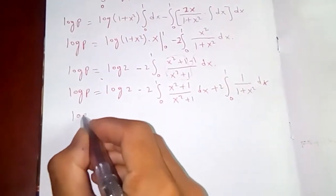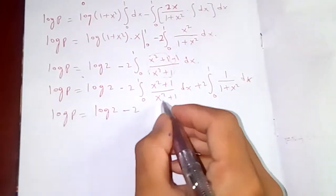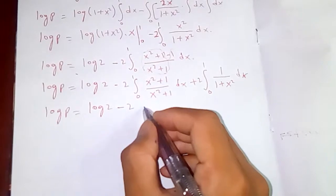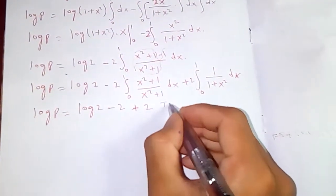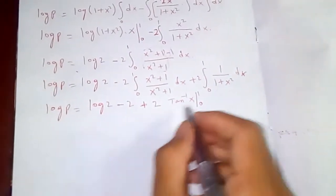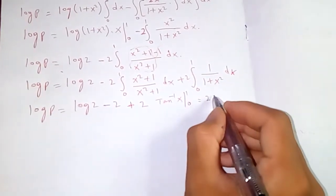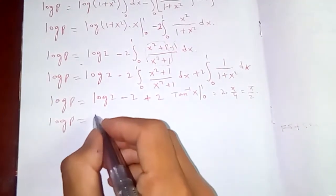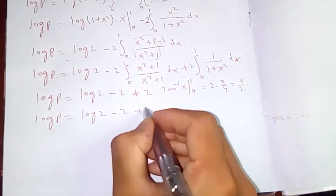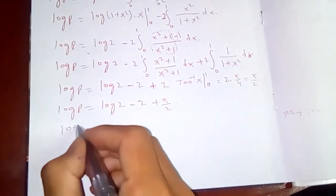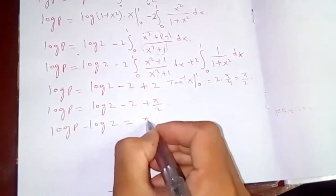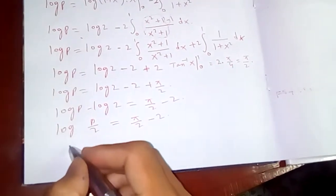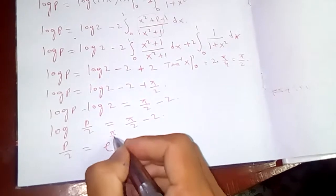The integral of 1 dx from 0 to 1 is just 1, giving −2. The integral of 1/(1 + x²) is arctan(x), and arctan(1) = π/4, so 2 times that is π/2. Therefore log p = log 2 − 2 + π/2.